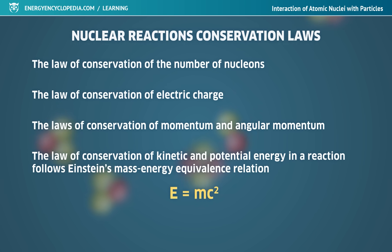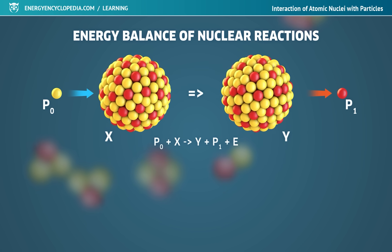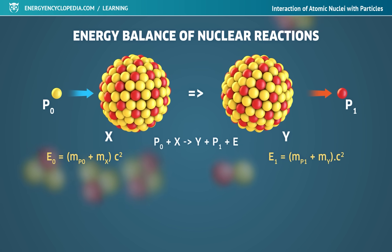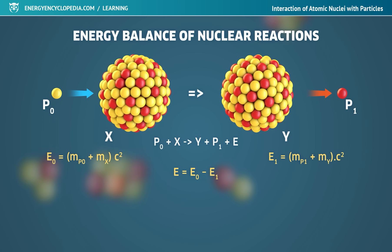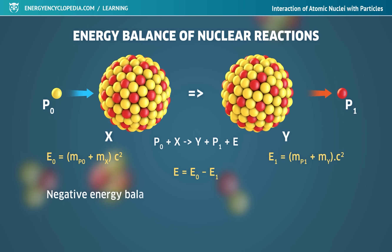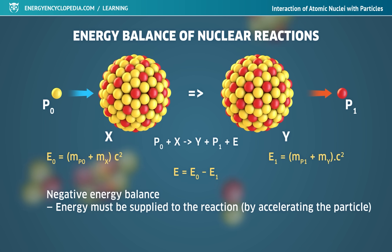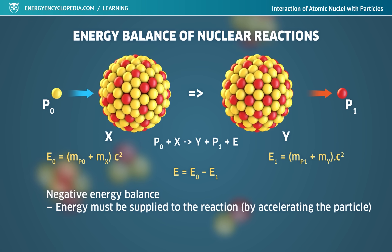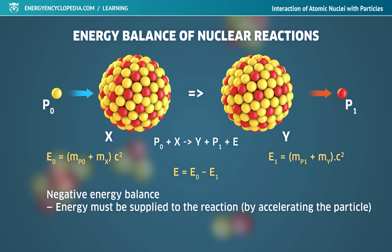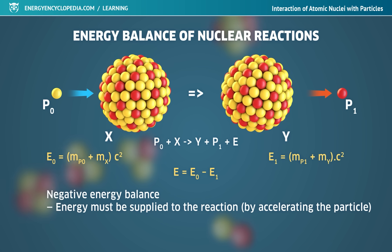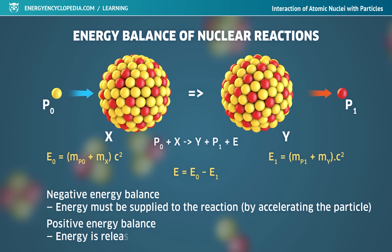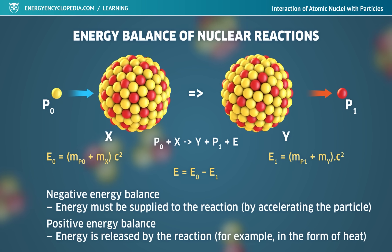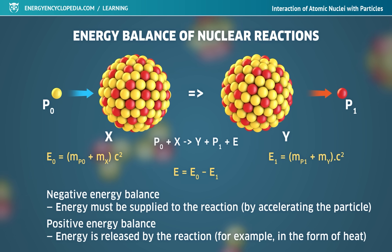An important parameter of nuclear reaction is its energy balance. According to the law of conservation of energy and Einstein's equivalence relation, the resulting energy of a reaction is given by the difference between the sums of the masses of all particles at rest, before and after the reaction. If the energy balance is negative, the nuclear reaction is endothermic and it is necessary to supply this energy. The most common way to introduce energy into a nuclear reaction is to significantly increase the kinetic energy of the incoming particles in accelerators. A positive energy balance means an exothermic reaction in which kinetic energy is released, making the transmutation energetically profitable.